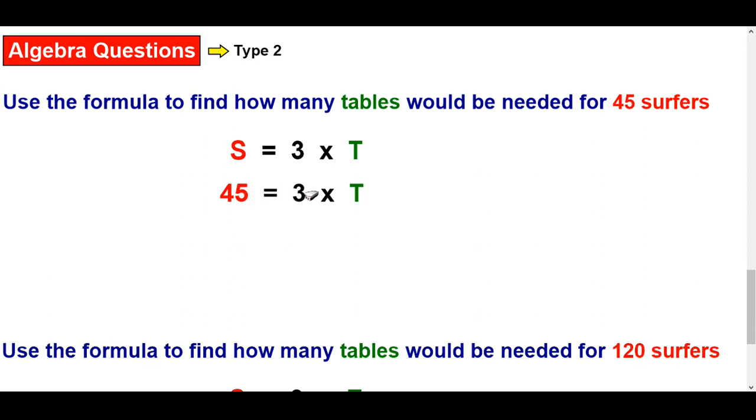So you're thinking 3 times what makes 45? Now some of you probably already got it, it's 15. But what do you do to the 45 and the 3 to get that? You can undo the multiply. So you divide by 3 and you'll get your 15.